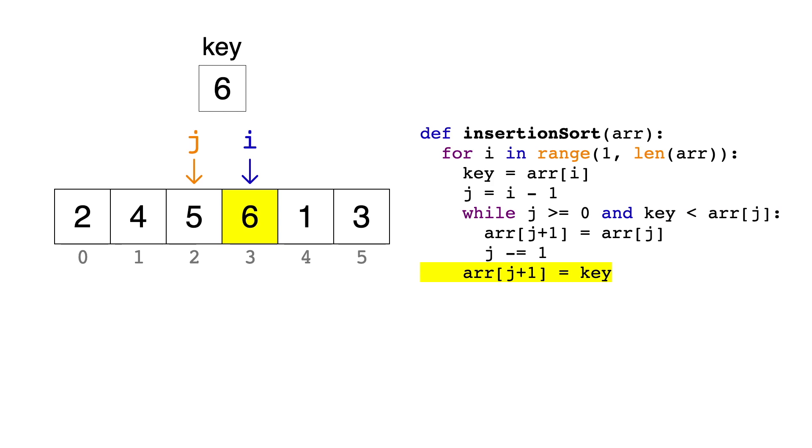We're going to come back to this point later in the big O analysis. Now on to the next iteration. You can intuitively tell that 1 should be at the start of the array. So I'm going to speed this up a little. First 1 will be compared to 6, then 5, then 4, then 2. At this point, j is out of bounds, so we stop and set the first item equal to 1.